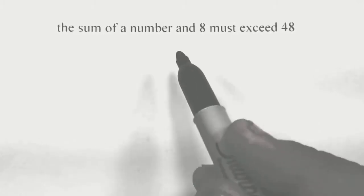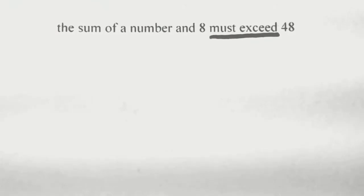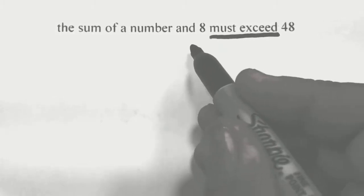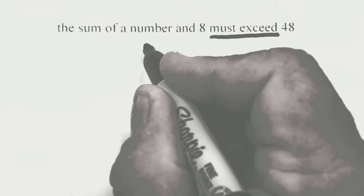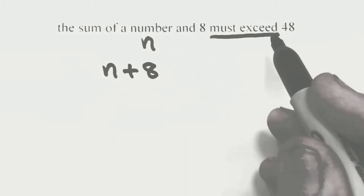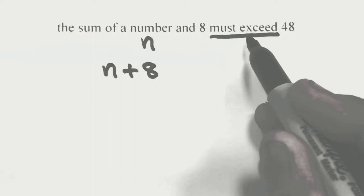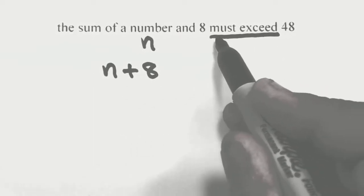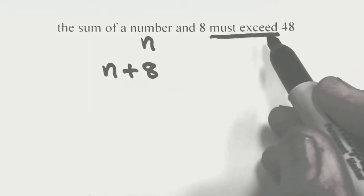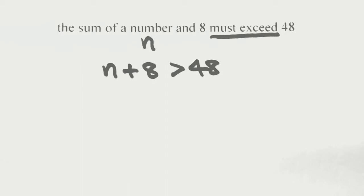Now let's look at some examples. The first one says: the sum of a number and 8 must exceed 48. They didn't say must equal 48 — must exceed indicates an inequality. The sum of a number, let's say n, and 8 gives us n + 8, which must exceed 48. Can it be more than 48? Yes, it must exceed. Can it equal 48? No, you've got to exceed it. Can it be less? No. So n + 8 must be greater than 48.